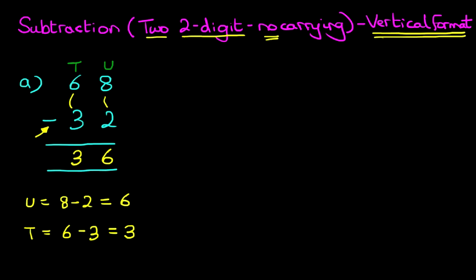And that's it. 68 minus 32 is 36. We get a nice big tick.